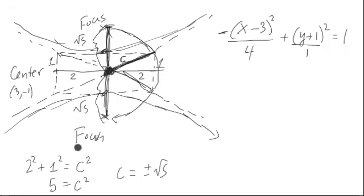So the coordinates, the specific coordinates of the two foci are where we take the center, and then notice that we're moving up and down in the y direction. So we say 3 comma negative 1 plus or minus the square root of 5. And these are the two coordinates of the foci.